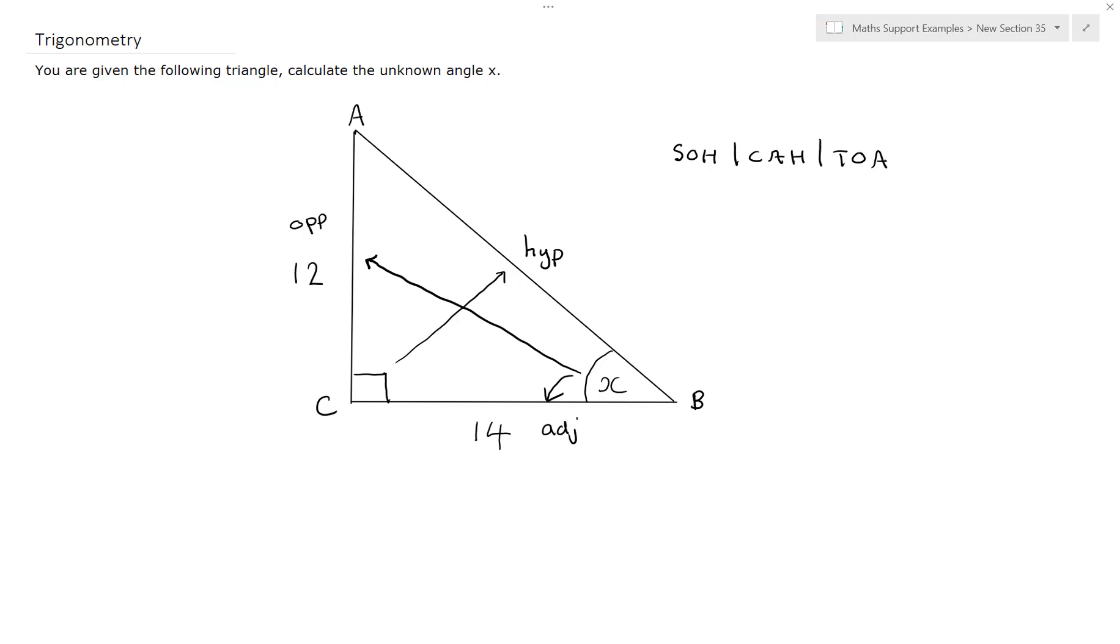Let's have a look at what we have here. We have the opposite, which is 12. We have the adjacent, which is 14. And we're looking for our angle, that's our unknown x. So we look at our three trig ratios.